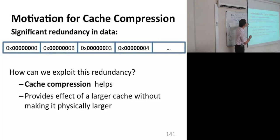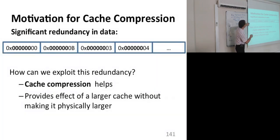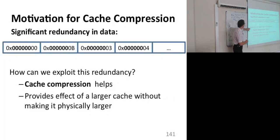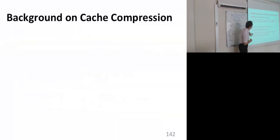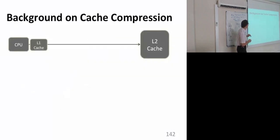This is the general motivation for cache compression. There's significant redundancy in data. If you look at a cache block, it may have a lot of zeros — we don't need to store those zeros. We can compress the data in the cache and store it with much fewer bits. This provides the effect of a larger cache without making the cache physically larger.